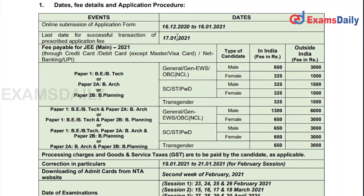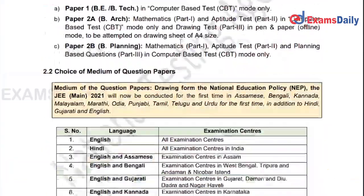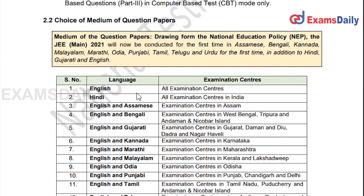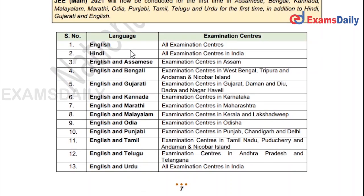Aspirants can apply now. The last date for application is 16th January 2021. Next, we are going to see the examination mode. Paper 1 (B.E./B.Tech) is a computer-based test. Paper 2A (B.Arch) has Mathematics and Aptitude Test as computer-based, and Drawing Test is conducted in pen and paper mode — an A4 sheet is provided for the drawing test.